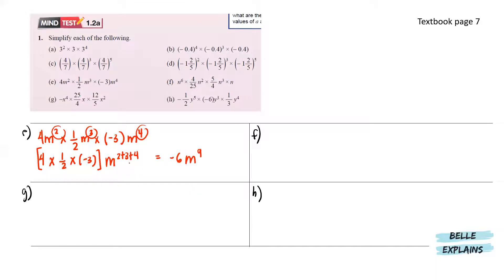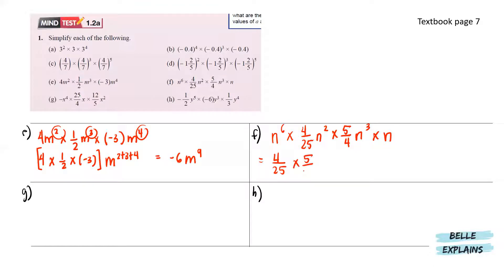Next for f, we have n to the power of 6 times 4 over 25 times n to the power of 2 times 5 over 4 times n to the power of 3 times n. So collecting the numerical coefficients and adding the powers of n gives us 4 over 25 times 5 over 4, and n to the power of 6 plus 2 plus 3 plus 1, which is n to the power of 12.